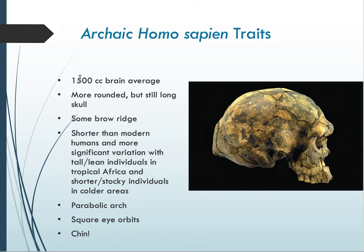Samples from 160,000 years ago to the present represent more modern Homo sapiens, which some scientists call Homo sapiens sapiens. Archaic Homo sapien traits include larger brains than modern Homo sapiens on average, a more rounded skull that is still slightly long, an occipital bun in some specimens, and a somewhat prominent brow ridge. They were shorter than modern Homo sapiens on average, with significant variation: tall, lean individuals in tropical Africa and shorter, stocky individuals in cold areas.